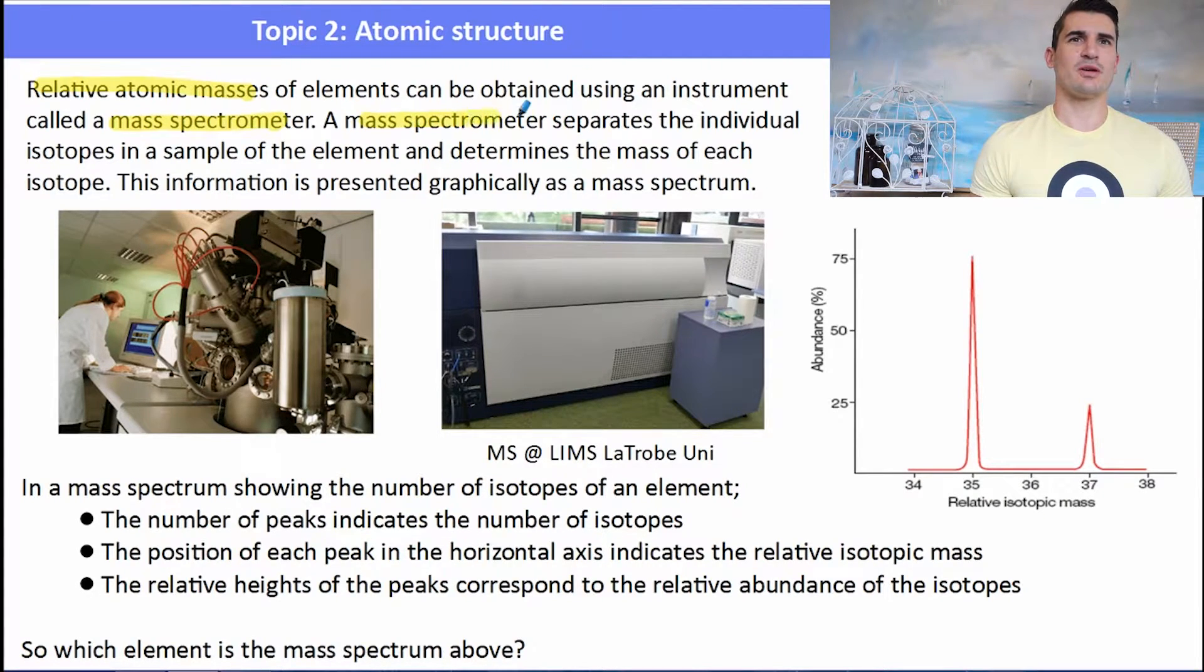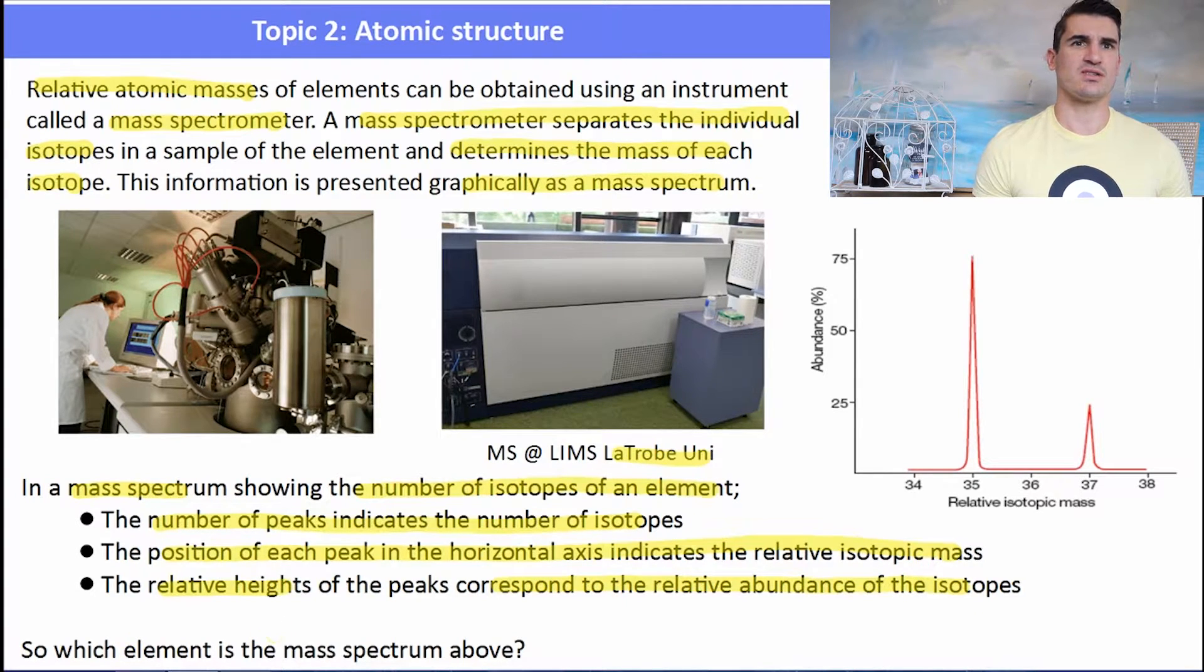So the relative atomic mass, which is essentially the mass of the element relative to carbon, is measured using an instrument called a mass spectrometer. The mass spec separates the individual isotopes and determines both the mass and the abundance of each, and then it presents it graphically. Here I have two images of a mass spec, one was where I went to uni at Latrobe. The mass spec shows the number of isotopes that an element has. It shows the number of peaks, which indicates the number of isotopes. The position of the peaks shows the relative isotopic mass, and the heights represent the abundance of those isotopes.